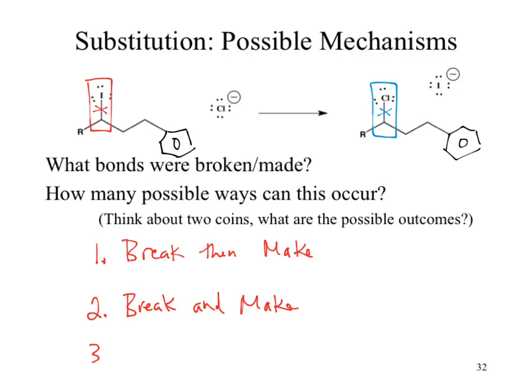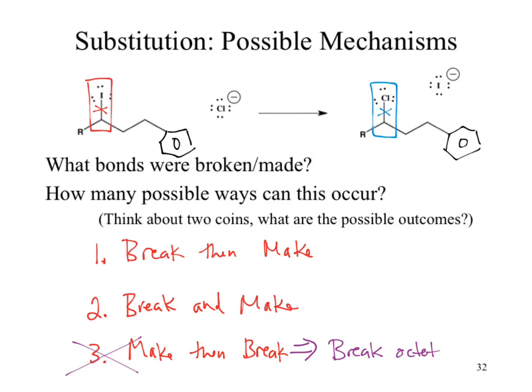There's actually a third option: make then break. But what happens with that last one? We break the octet rule. Are we allowed to do that? Which means life just got simpler — I don't have to worry about that type of mechanism. There is officially a fourth way: homolytic bond cleavage. When we break the bond, the electrons go back to their parent atoms, generating free radicals. That stuff's crazy — let's worry about that later. So there's two ways to do this.